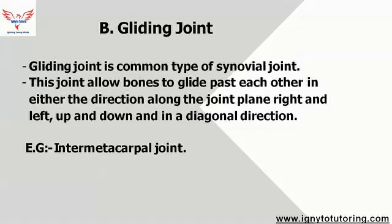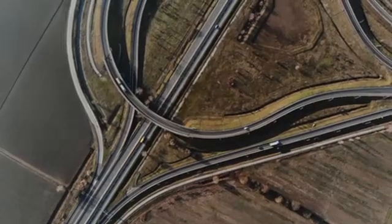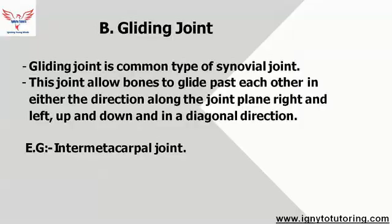Gliding joints allow bones to glide past each other in either direction of the joint. An example of gliding joints are the intermetacarpal joints.